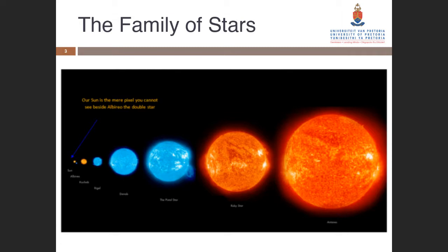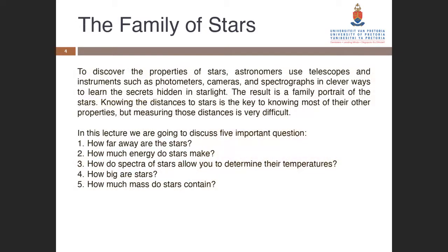During my preparation for tonight's class I found a few videos I would have liked to show you. Immediately after class I'll post the links to these videos on all our platforms — you will actually be amazed. There are excellent videos showing the magnitude of our sun versus other stars. To discover the properties of stars, astronomers use telescopes and instruments such as photometers, cameras, and spectrographs in clever ways to learn the secrets hidden in starlight.